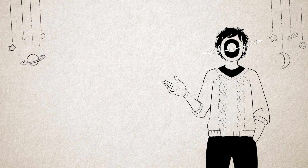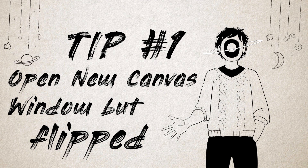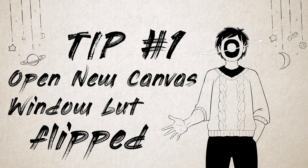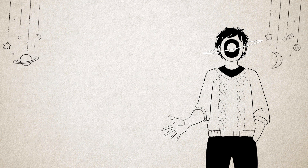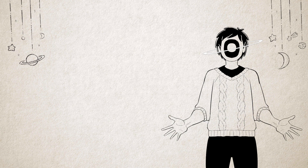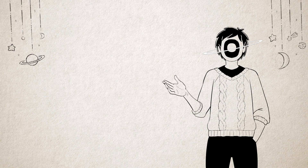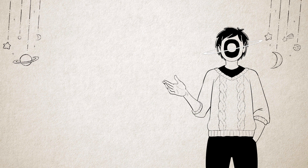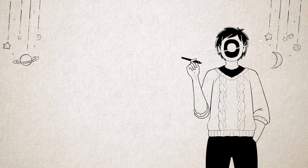Tip number one: open a new window of your canvas but flipped. It's a common struggle for digital artists to work on something for a long time, then flip it horizontally and realize how many proportional mistakes have been made. So here's how to open a new window with your canvas flipped so you can catch your mistakes preemptively.